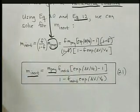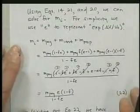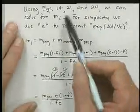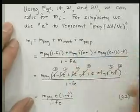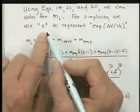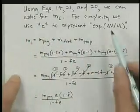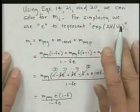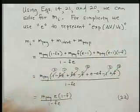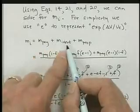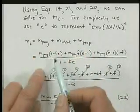And there's another thing we can do, we can combine all these equations to get the initial mass in terms of the payload mass. So I'm going to use equations 14, 21, and 20 to solve for m_i, and to make things easier to write, I'm just going to use a little e for now to represent the exponential delta v over ve. It's a lot less writing and less prone to error when you have simpler symbols. So, here we have m_i is m_payload plus m_inert plus m_prop.